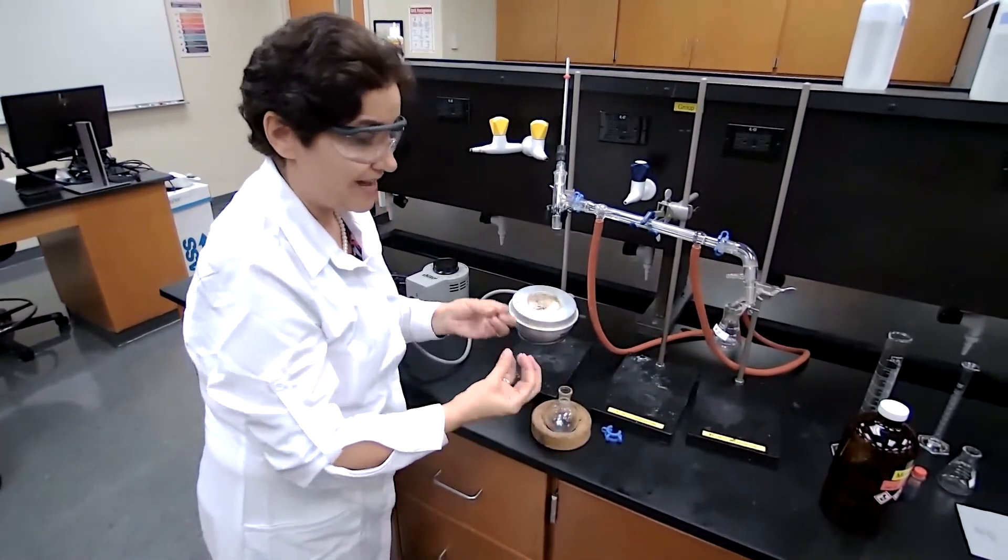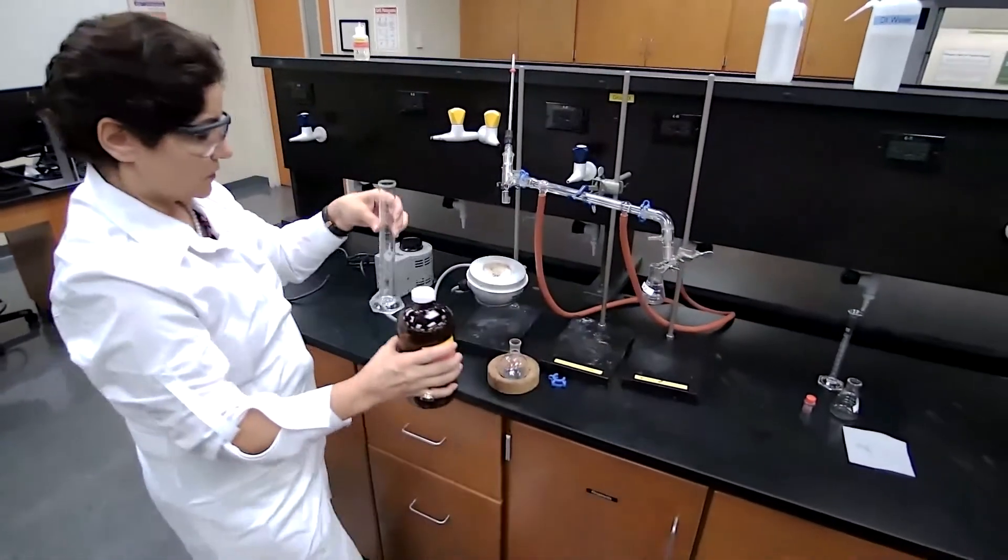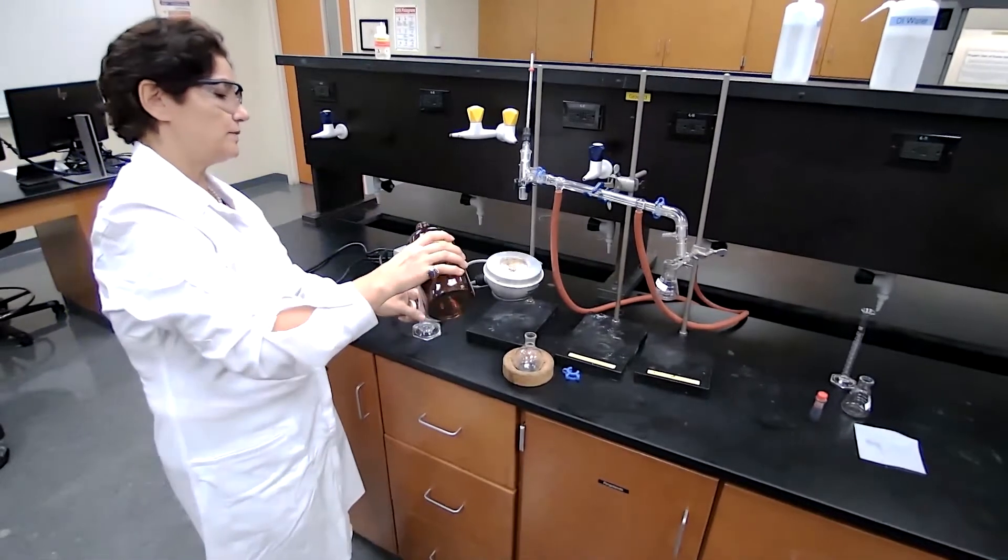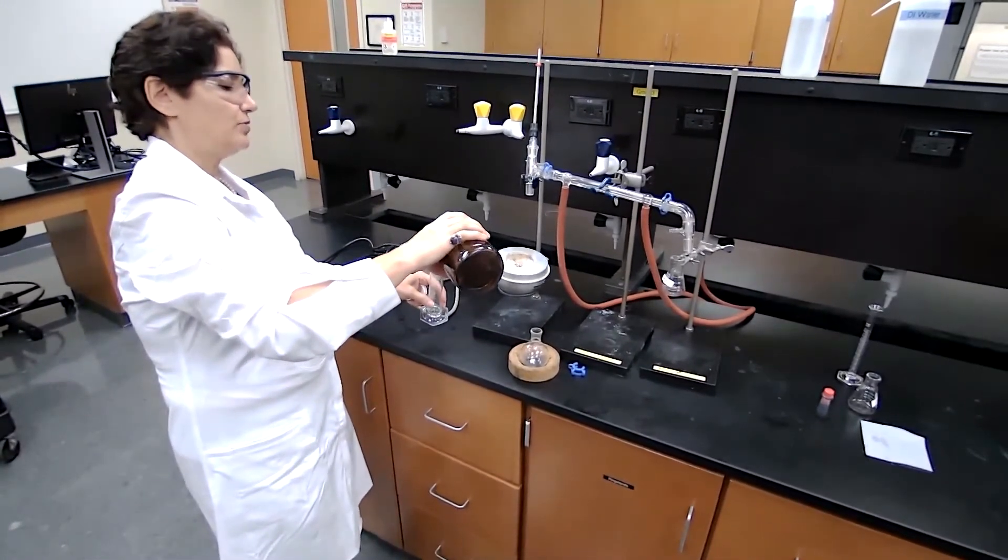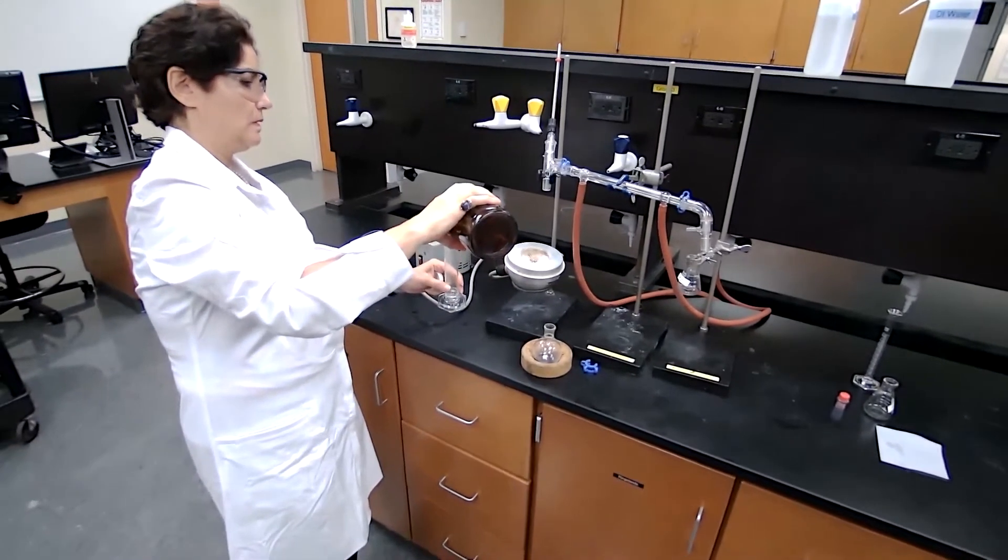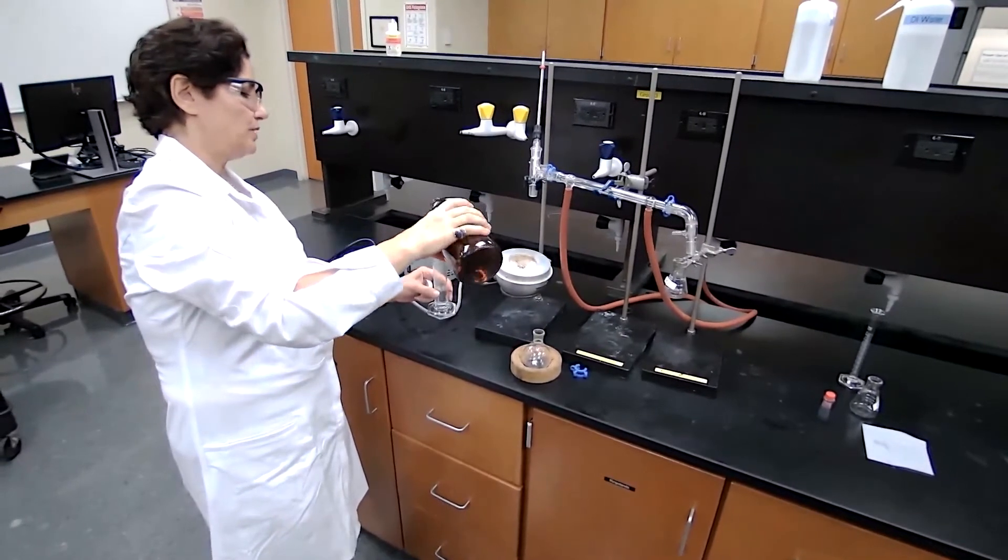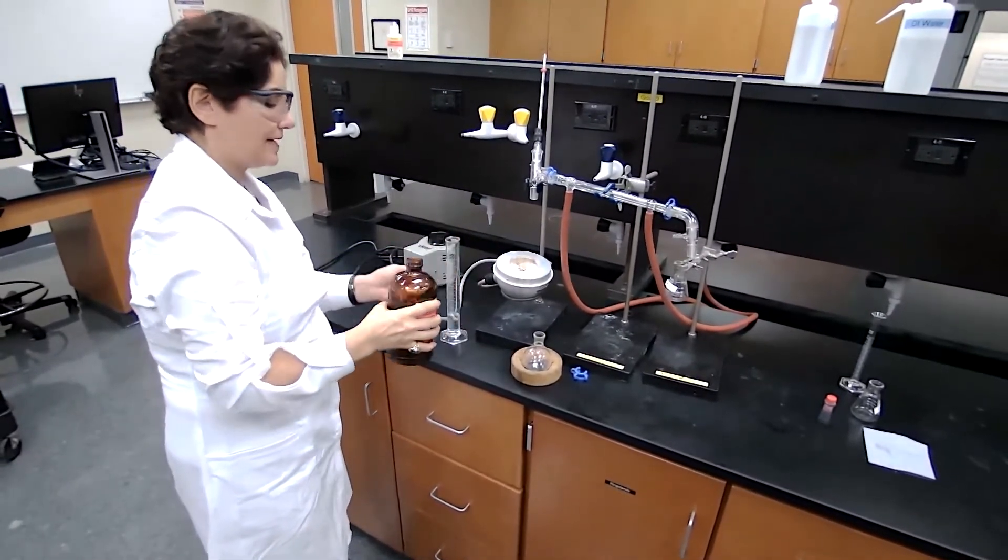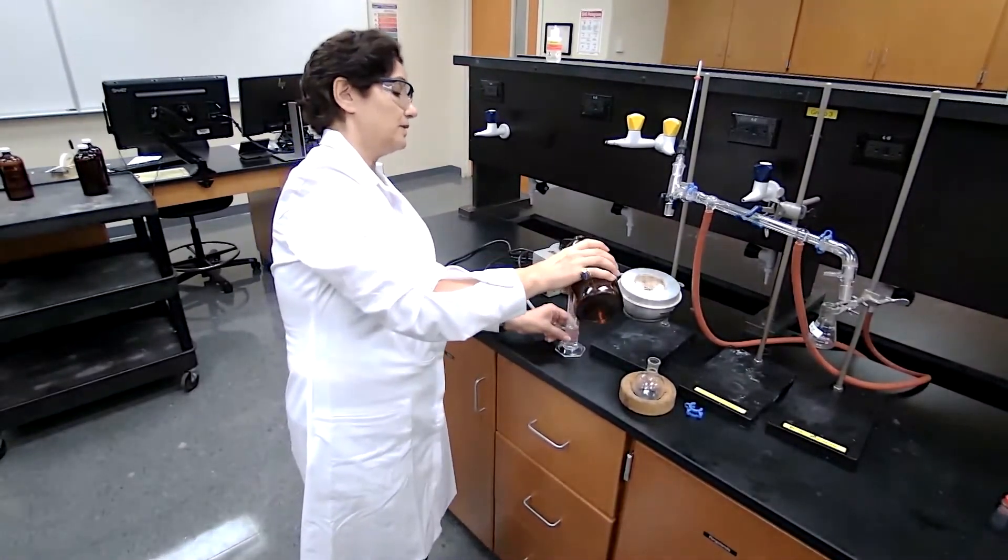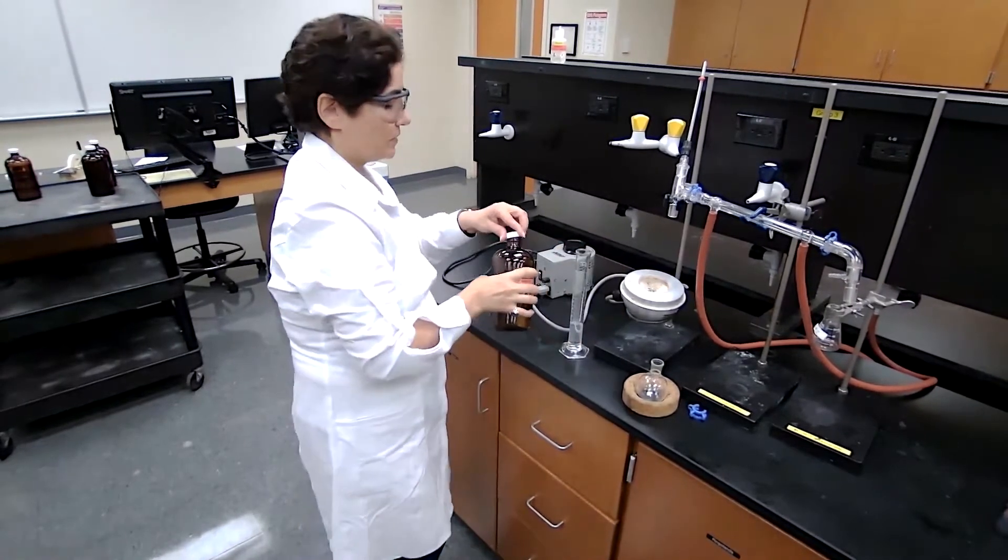We hold the round bottom flask in there and I'm going to measure 25 milliliters of methanol. This is following the procedure. The level of the liquid in the boiling flask cannot be more than two-thirds, cannot be less than one-third, so I'm going to make it 30 milliliters. I will add 30 milliliters of methanol.